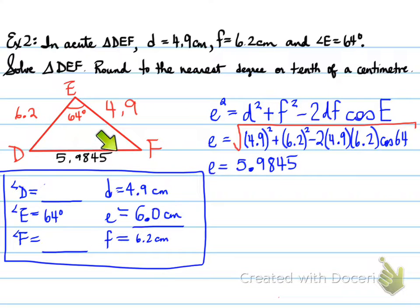We're going to use sine law to solve for angle F or angle D, your choice. So we set it up, sine D over 4.9 is equal to sine 64 over 5.9845, and we solve for D.